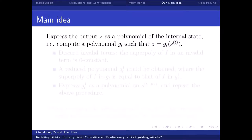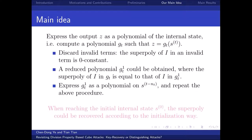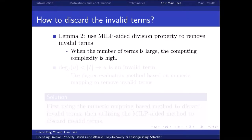According to the above two lemmas, we propose a new method to recover the superpoly of a given cube based on division property. First, we express the output z as a polynomial on the internal state at time t, and a reduced polynomial g_{t,1} is obtained. For g_{t,1}, we further express it as a polynomial on the internal state at time t minus nt, then repeat the procedure. When reaching the initial internal state, the superpoly can be recovered. We now discuss some details of our method.